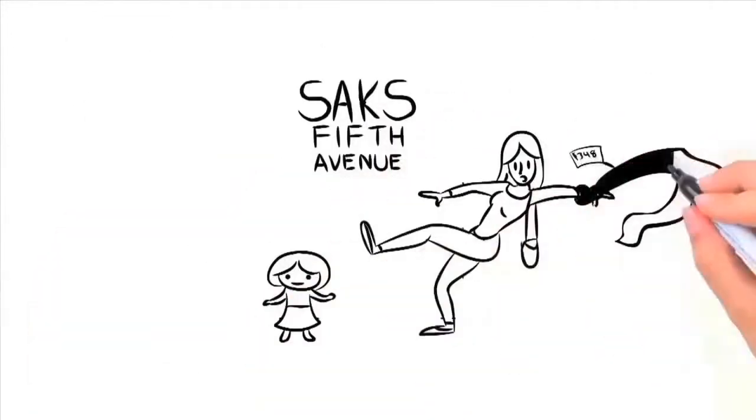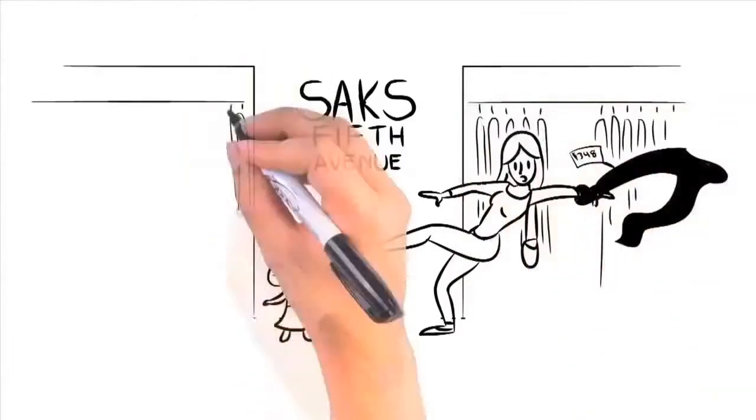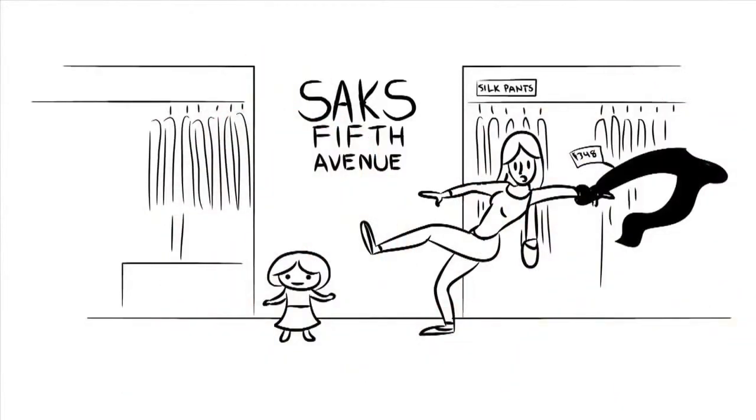There I was in Saks Fifth Avenue with my little Emily, who is now just 26 months old and in her first week of potty training, when a pair of $348 black silk Prada dress pants leapt off the rack and led me to a change room.